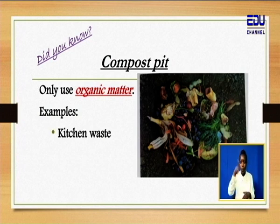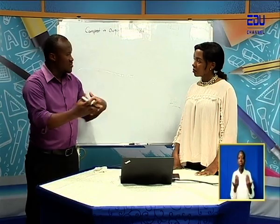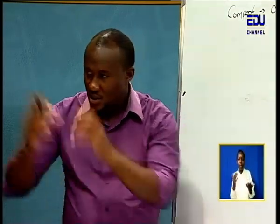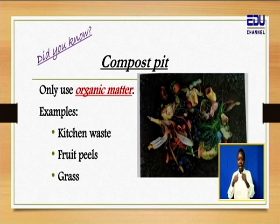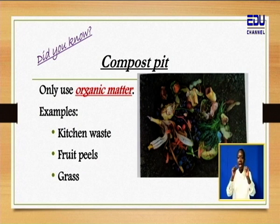Some of the things you can use: we have kitchen waste - for example when you are cooking and have vegetables like spinach, there is a part you cut and throw away. Don't just throw it away - put it in a compost pit. Leftover foods can also go there - they will decay. We have fruit peels. Then we have grass - grass is living, so once you have mowed your lawn, take that grass and put it in the compost pit. Also animal waste - when you wash the cow shed, the pig sty, the rabbit hutch, just take it and throw it in the compost pit.